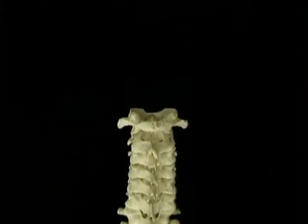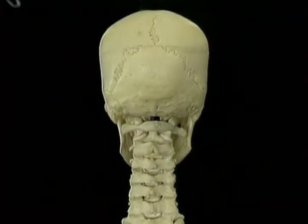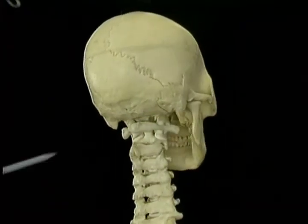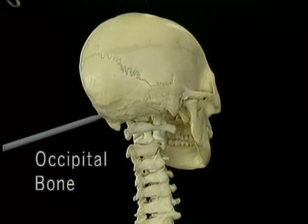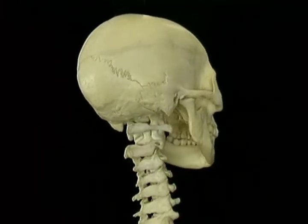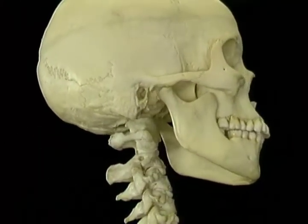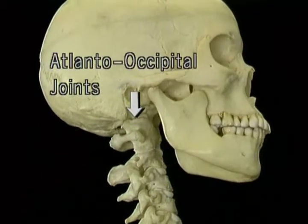In that tape, we'll also look at the way the atlas vertebra articulates with the bone that forms the underside of the skull — the occipital bone. The joints between the atlas and the occipital bone are called the atlanto-occipital joints.